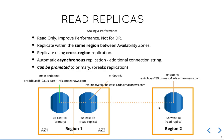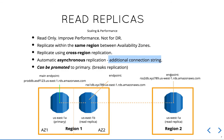In this diagram, we're doing one read replica in the same region and a second read replica in a different region — US East and US West respectively. Each read replica receives a different connection string. Read replicas are asynchronous, as opposed to the synchronous replication used in multi-AZ, and each read replica endpoint gets its own connection string.